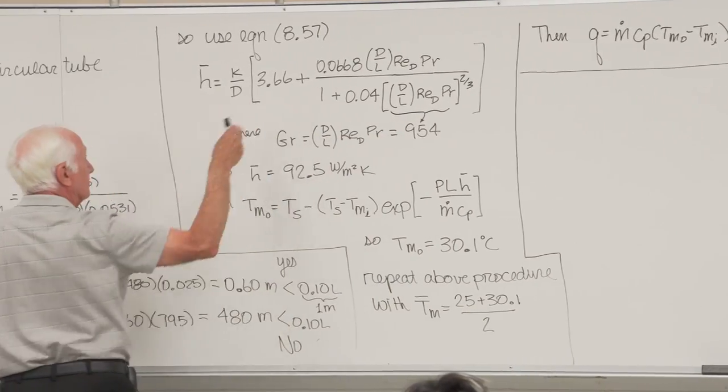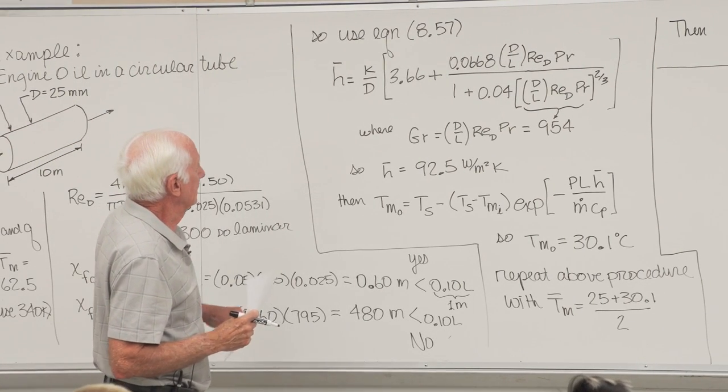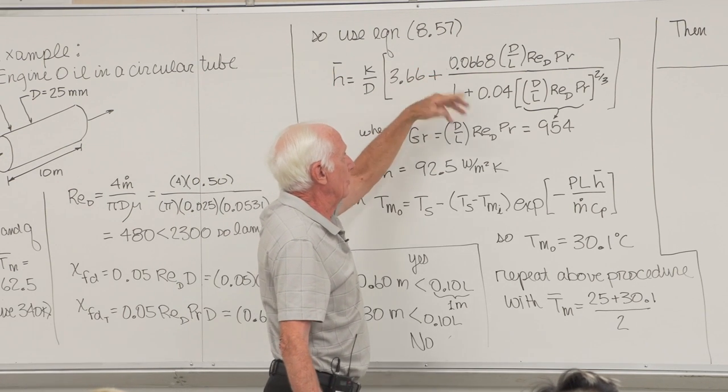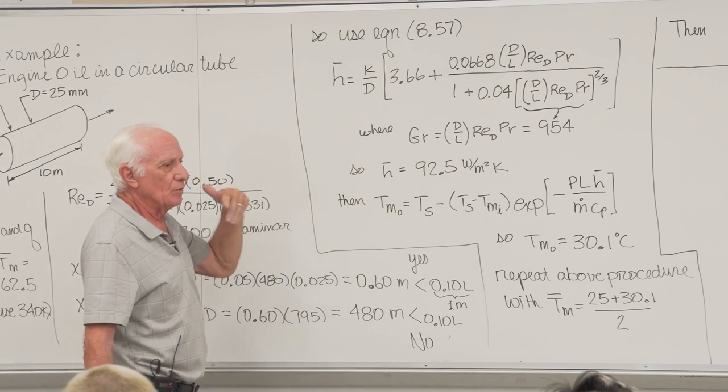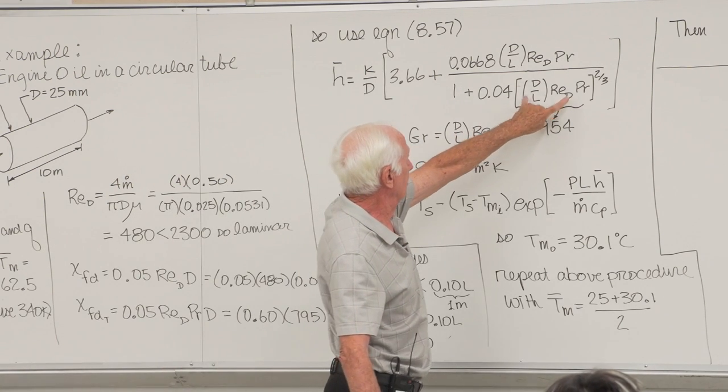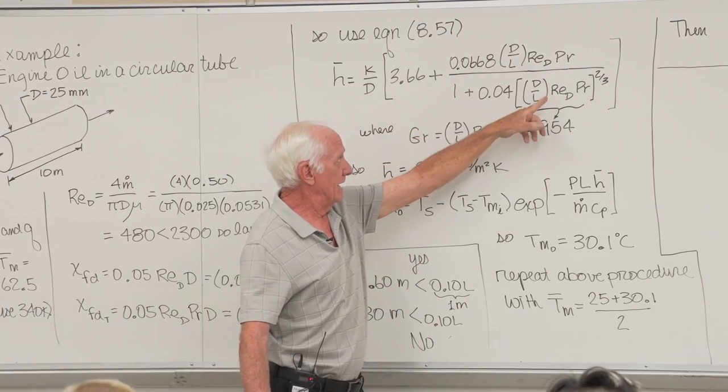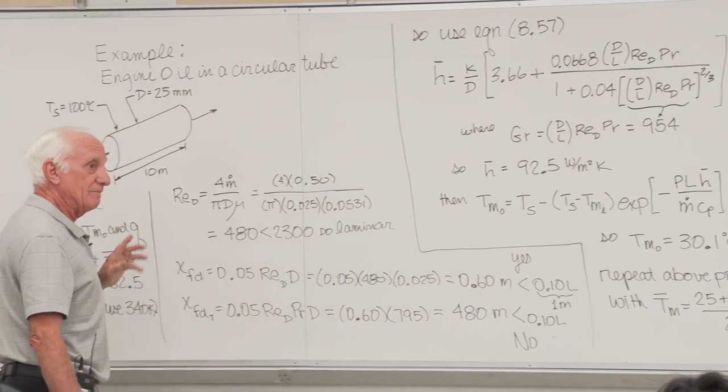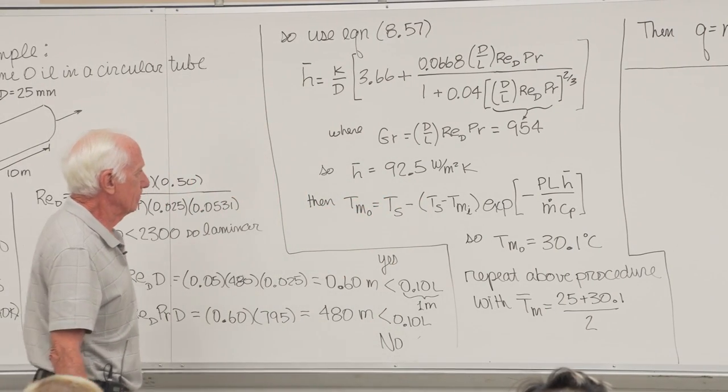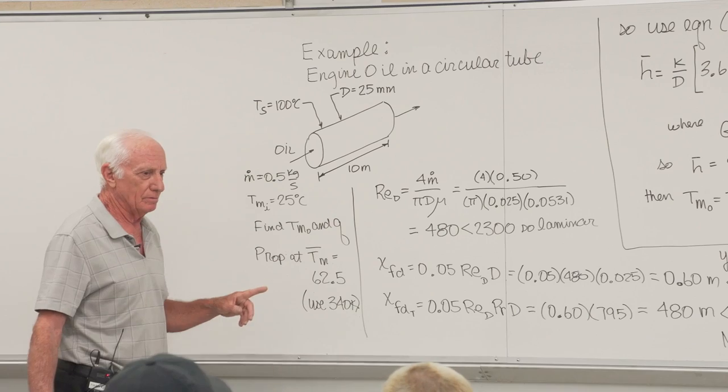There it is from the textbook. I know K, I know D, I know L, I know Reynolds, Prandtl, I know everything. If you want to, you can calculate what's called the Grotz number. If you do that, you get h bar 92.5 watts per square meter K. I got h bar. But that's not what I'm trying to find really. The problem said find t mean out and q.